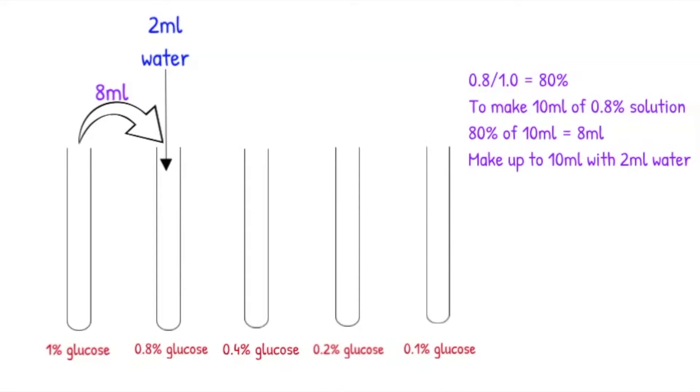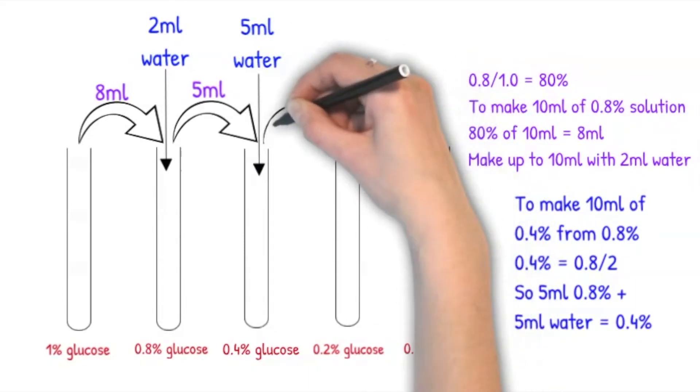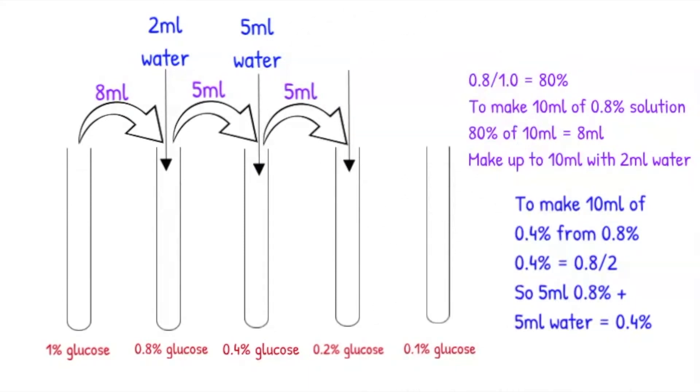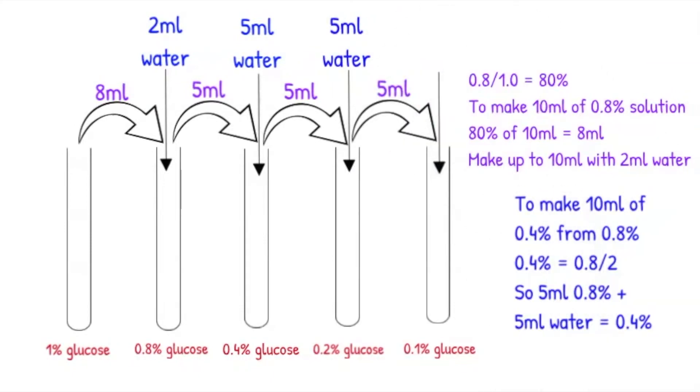It is then much easier because we are going from 0.8% to 0.4% and 0.4% is half of 0.8%, so we add 5 milliliters of 0.8% glucose and 5 milliliters of water. We then repeat this to make 0.4% into 0.2% and 0.2% into 0.1% glucose.